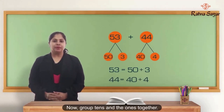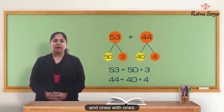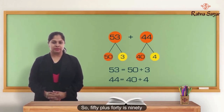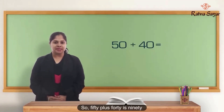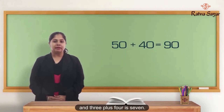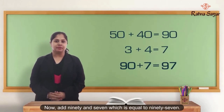Now group the tens and ones together. Add tens with tens and ones with ones. So, 50 plus 40 is 90, and 3 plus 4 is 7. Now add 90 and 7, which is equal to 97.